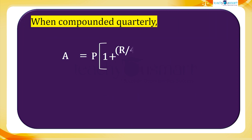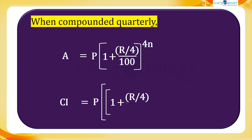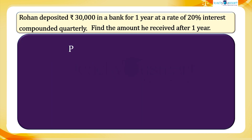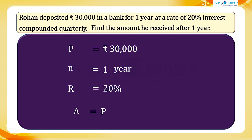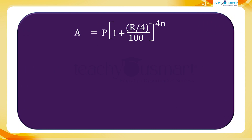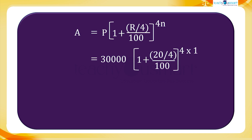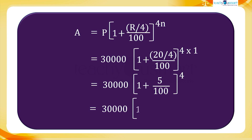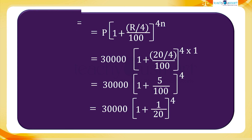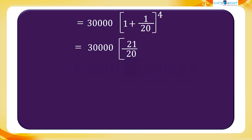Let's do the above problem with the generalized equation. We have P equals 30,000 rupees, N equals 1 year, R equals 20%. We know that A equals P multiplied by (1 + R/4 divided by 100) raised to 4N, equals 30,000 multiplied by (1 + 20/4 divided by 100) raised to 4×1, equals 30,000 multiplied by (1 + 5/100) raised to 4, equals 30,000 multiplied by (1 + 1/20) raised to 4.